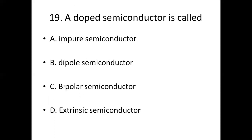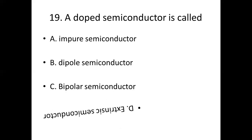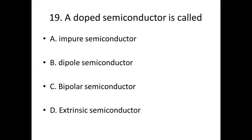Question 19: A doped semiconductor is called? Option A: impure semiconductor. Option B: dipole semiconductor. Option C: bipolar semiconductor. Option D: extrinsic semiconductor. Answer: Option D — extrinsic semiconductor.